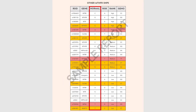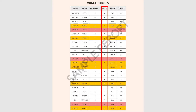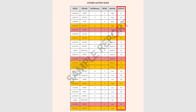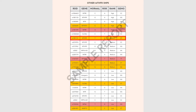The Normal column denotes the variant associated with normal enzyme activity, and the Risk column displays the variant associated with reduced enzyme activity. Geno refers to your genotype. If you carry two risk variants for the SNP, then it is marked in red. If you carry one risk variant, it is marked in yellow, and if you carry two normal variants, it is marked in white.